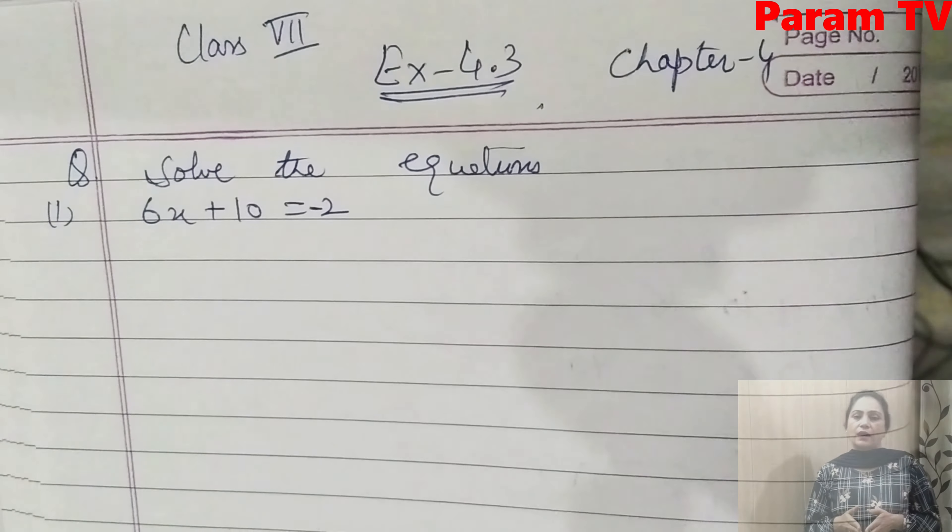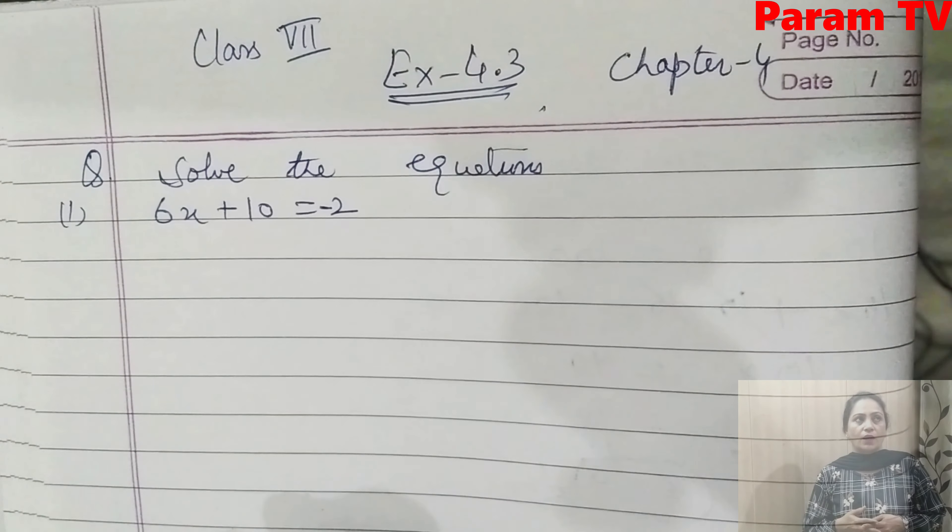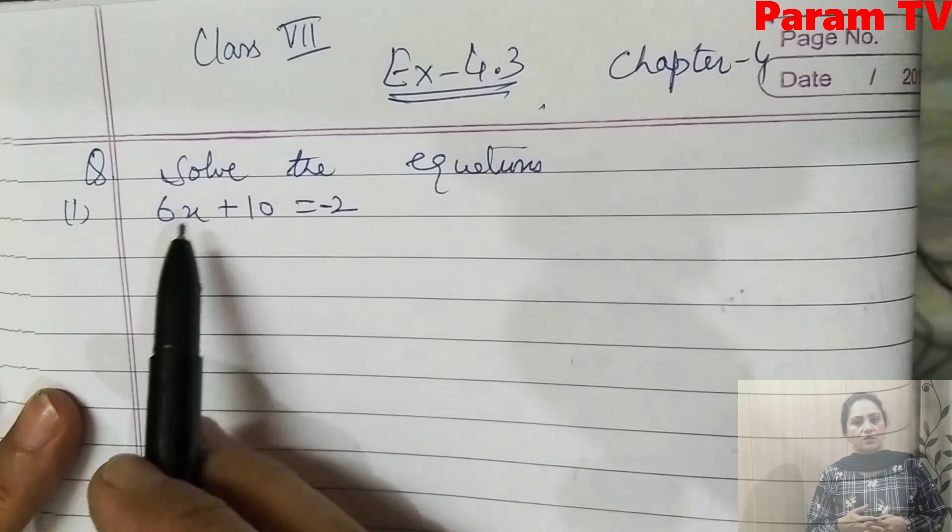What happens is that the variables and the constant numbers — we have to remember that whatever term changes its side will change its sign. Suppose I take this plus 10 and shift it to that side — it goes to LHS, so its sign will change. Like if here is plus 10, then it will become minus 10. This is the transposing method — transposing the terms.